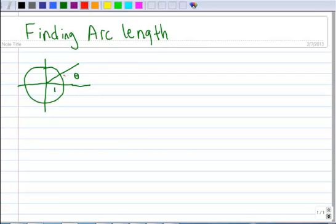If the radius is 1, the arc length, which we'll call x, equals the angle when it's in radians.